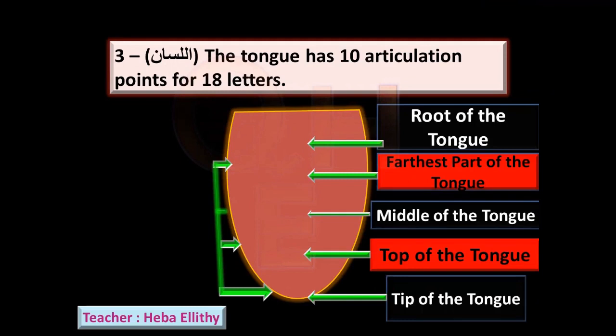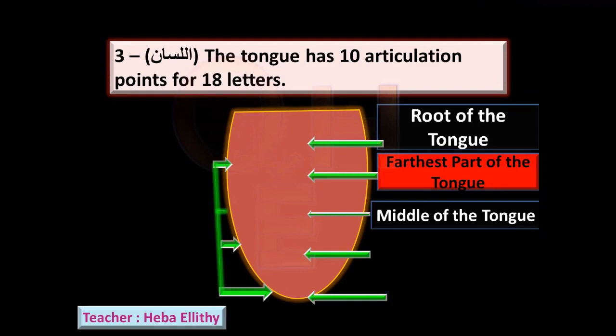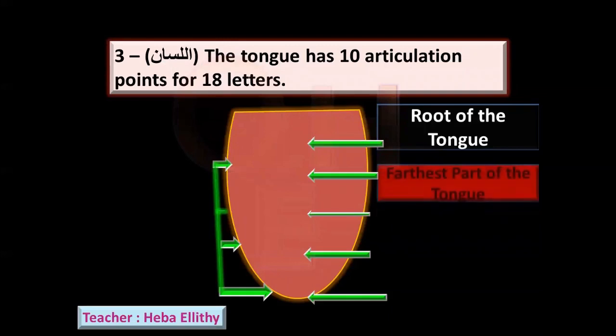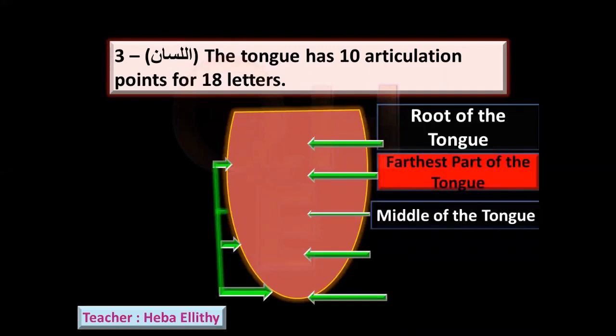To remind you very quickly about the tongue picture — al-lisan — the tongue has 10 articulation points for 18 letters. This area is the root of the tongue. The farthest part and the middle of the tongue we finished in the classes before. You can go back in the description box under the video; there is a black arrow, and if you click on it you will find all the links for each lesson in this chapter.